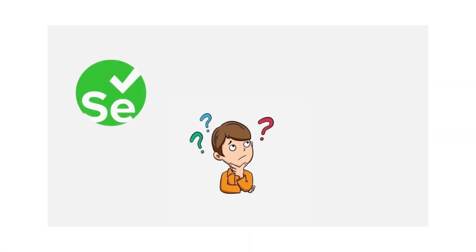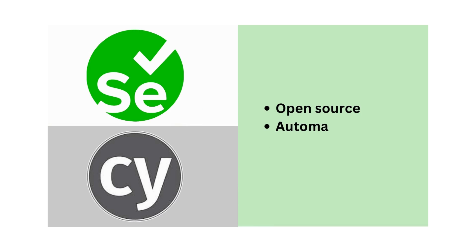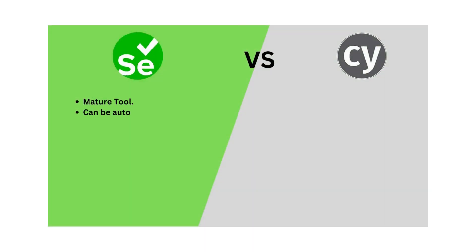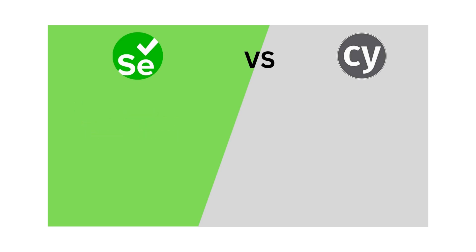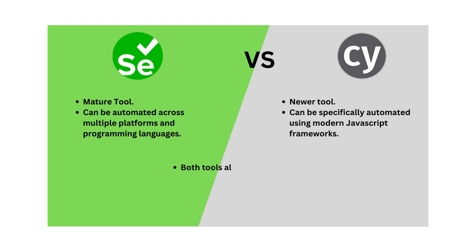Are you struggling to pick an automation tool between Selenium and Cypress? Let us help. Selenium and Cypress are both open source test automation frameworks used to automate web browser testing. Selenium is a more mature tool used for automating web applications across different browsers, platforms, and programming languages. Cypress is a relatively newer tool designed to test web applications specifically built using modern JavaScript frameworks.